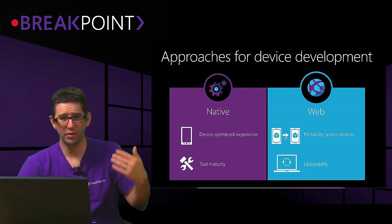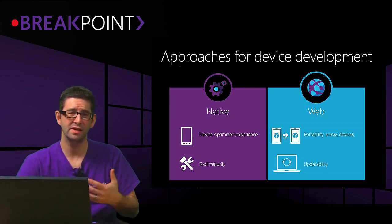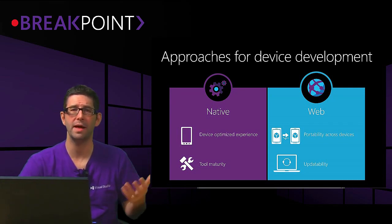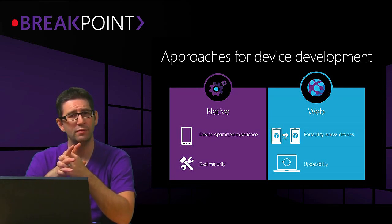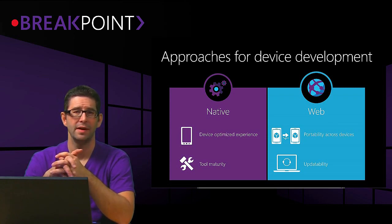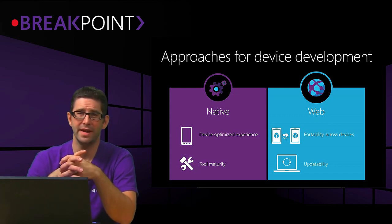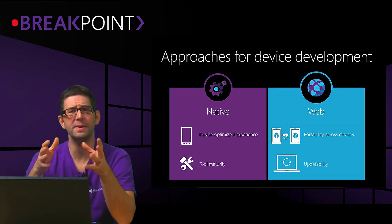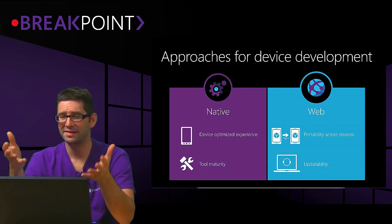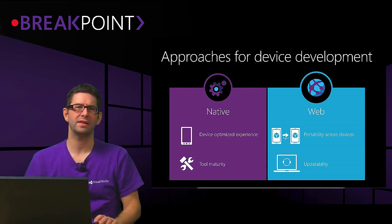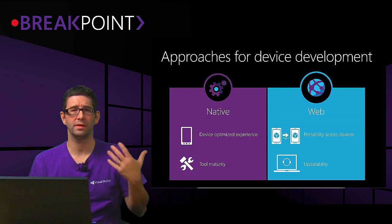Both have their drawbacks. From a native standpoint, you have to pay very special attention to each mobile platform you're supporting. On the web or hybrid side, you have to worry about the look and feel of your application. If you build a single web application that looks like an iOS app, it's not going to look good on a Windows Phone or Android device. So you have to pay close attention to design and experiential components. It's a balancing act — you have to figure out what's most important to you as a developer and what will resonate with your end users.